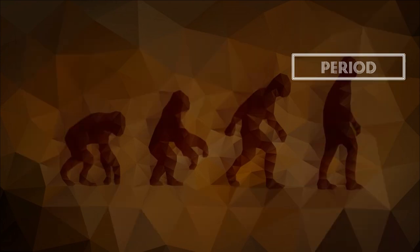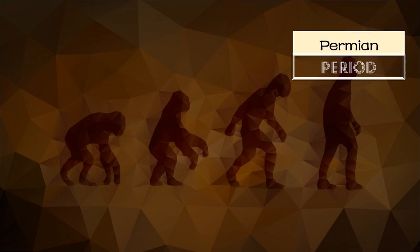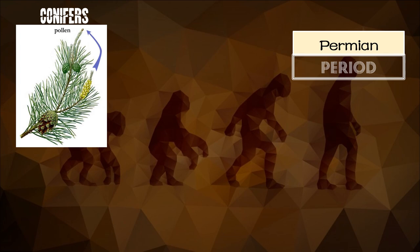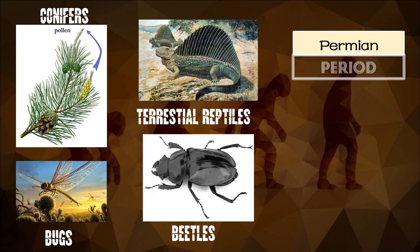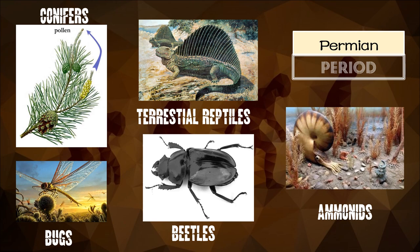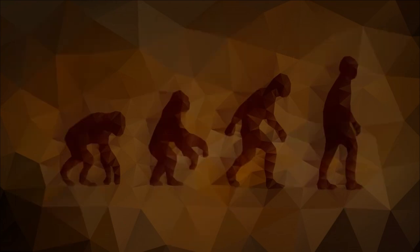Last under the Paleozoic era, we have the Permian period. The Permian period extended from 290 million to 248 million years ago. Living things under the Permian period were conifers, terrestrial reptiles, beetles, bugs, freshwater bony fishes, and ammonoids. At the end of the Permian period, one of the Earth's greatest extinctions occurred. The fossil record changed at the end of the Permian period, and a new era — the Mesozoic — began.